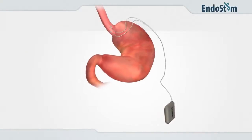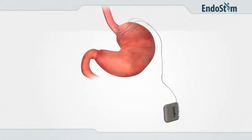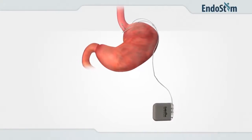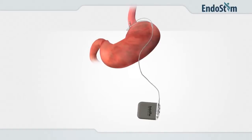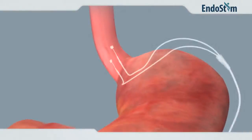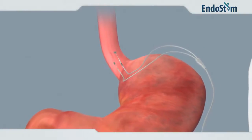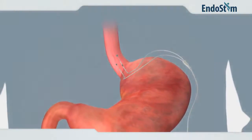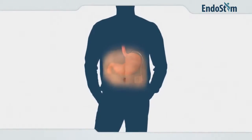EndoStim therapy is a new, minimally invasive approach designed to strengthen the esophageal sphincter muscle but leave the anatomy nearly untouched. Two small electrodes are placed on the lower esophagus. The electrodes are connected to a stimulator placed under the abdominal skin.